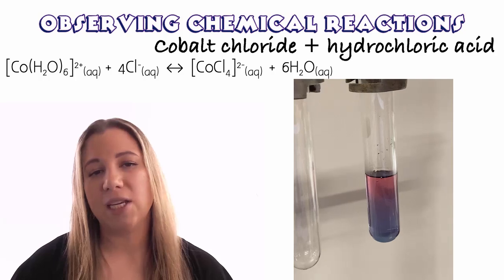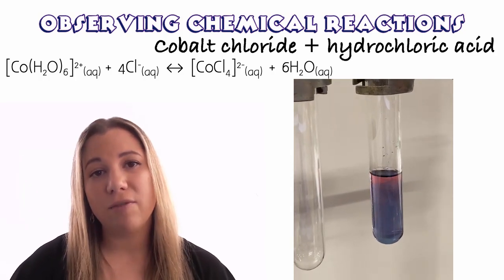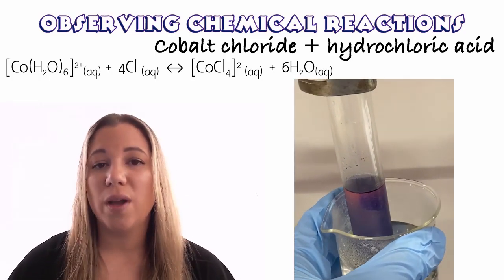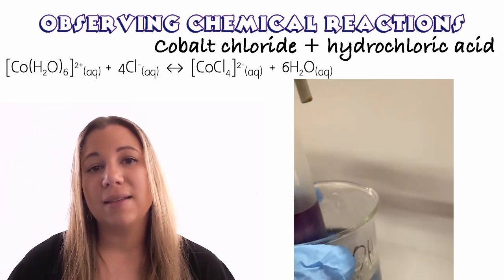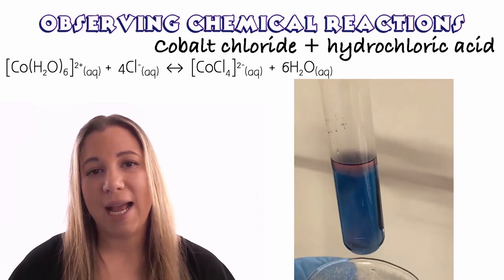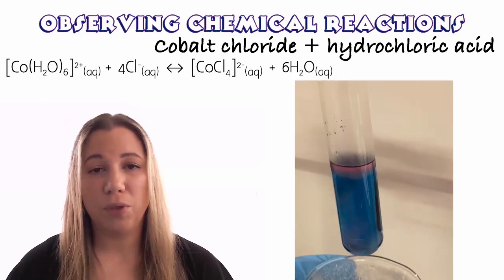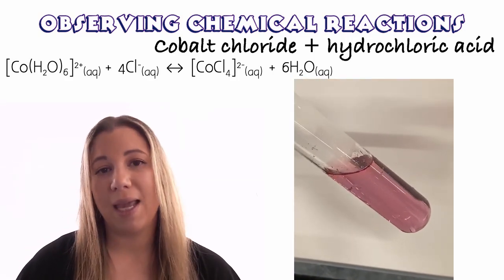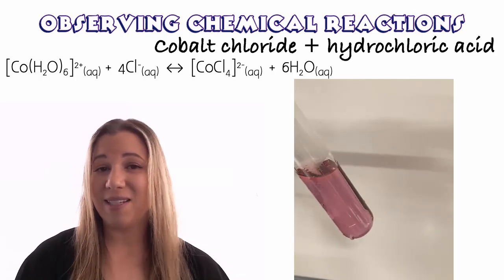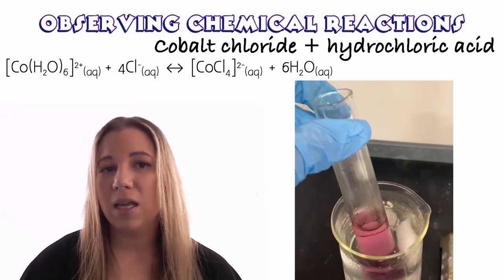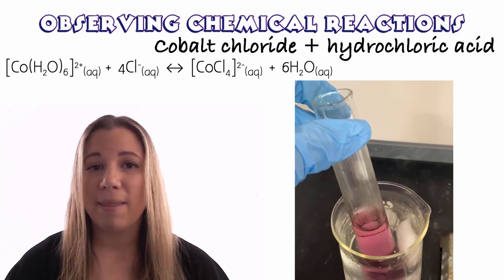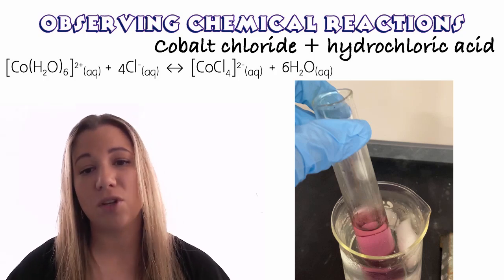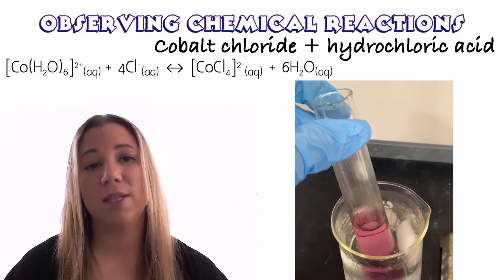The next part of that experiment looked at the same reaction but this time we were adding and removing heat energy. Adding heat causes some of the water in the solution to evaporate, so there's less water and the cobalt reacts with the hydrochloric acid again — that's why it turned blue. When we removed the heat by putting it in a cold water bath, this reverses the reaction and so it turns pink again. Is this an open or closed system? Because those test tubes were not sealed, it has to be an open system.